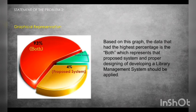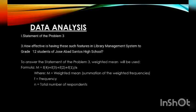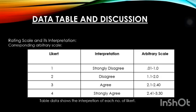Next is the analysis for statement of the problem number 3. Question: How effective is having such features in the library management system to Grade 12 students of Jose Abad Santos High School? To answer this, weighted mean will be used. The formula is: M equals the sum of F4 plus F3 plus F2 plus F1 divided by N, where M is the weighted mean, the summation of the weighted frequencies, F is the frequency, and N is the total number of respondents. Here is the Likert table.